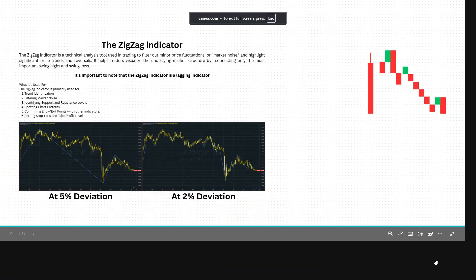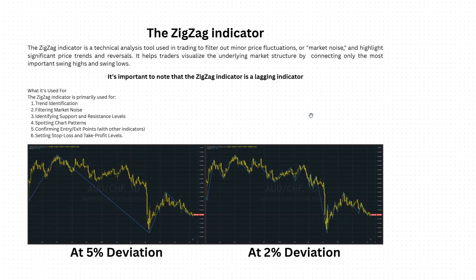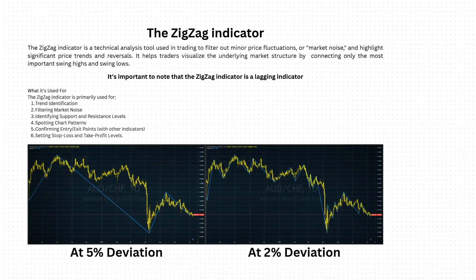Without further ado, let's dive into this. I've mentioned this multiple times on my channel but people never really took notice of what it was — it is called the zigzag indicator. The zigzag indicator is a technical analysis tool that shows you all the highs and lows based on the deviation of price you set it to. By definition, it filters out minor price fluctuations or market noise and highlights significant price trends and reversals. It helps traders visualize the underlying market structure by connecting only the most important swing highs and swing lows.